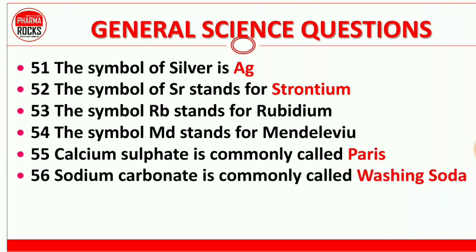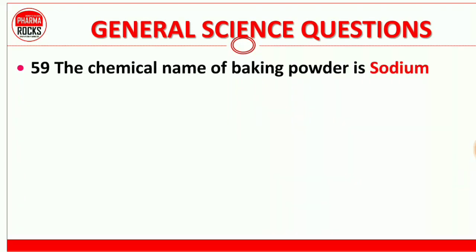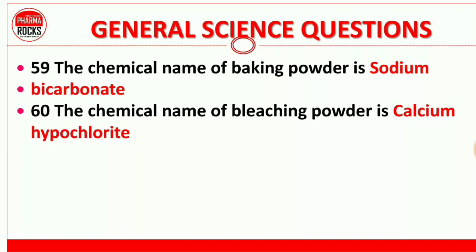Question 56: Sodium carbonate is commonly known as washing soda. Question 57: Sodium chloride (NaCl) is commonly known as common salt. Question 59: The chemical name of baking powder is sodium bicarbonate. Question 60: The chemical name of bleaching powder is calcium hypochlorite.